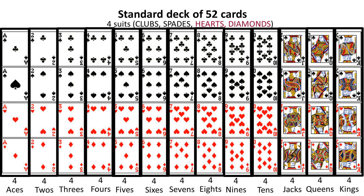You can also break them up by the number or the symbol on the card. If you look at the first column, those are called aces — the A's are aces, and there are 4 of them, one of each suit. Then you have the number cards, 2 through 10. Then you have the jacks, the queens, and the kings.